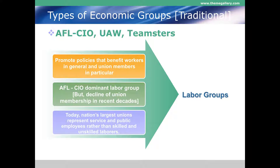Labor groups promote policies that benefit workers in general and union members in particular. The problem for unions is that union membership, except in the public sector — which includes teachers, trash collectors, and other government employees — has vastly declined in the last 50 years in the private sector. The dominant organization in labor groups is the AFL-CIO, the American Federation of Labor and the Committee of Industrial Organizations.